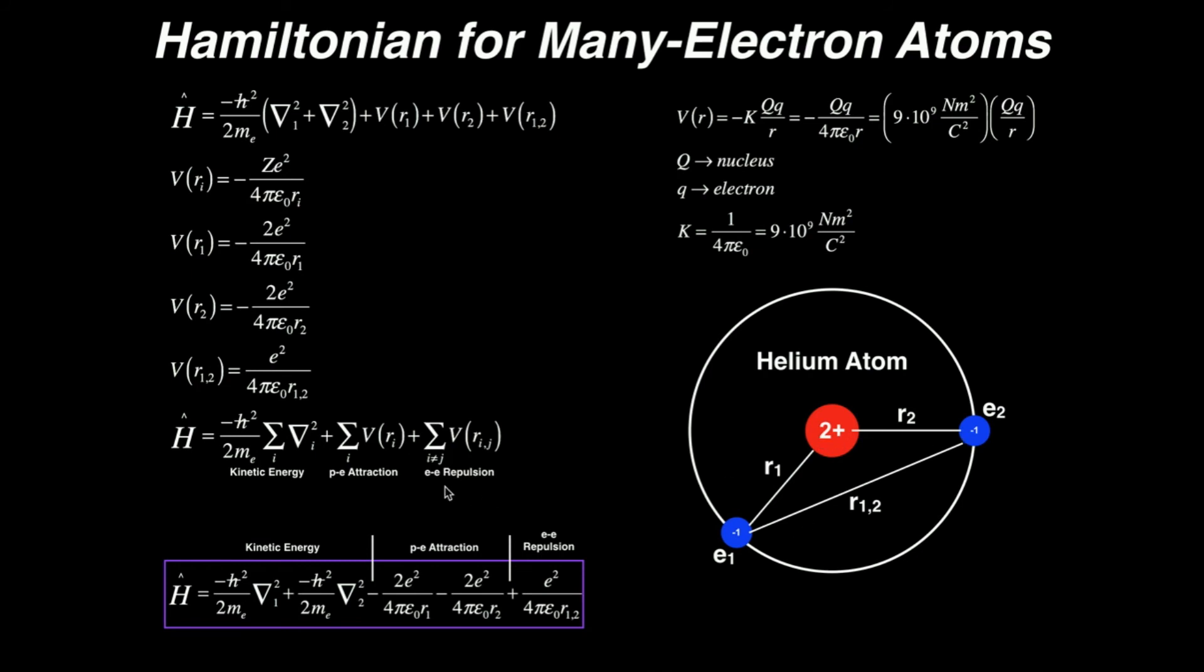Now we add on the potential energy terms for the attractions. They're also negative. So we determined that they were negative two e squared over four pi epsilon zero r1 minus two e squared over four pi epsilon zero r2. And again, we have two electrons, so there's two attractive terms. Each electron is attracted to the nucleus. Then we have our electron electron repulsion term. So this is just going to be e squared over four pi epsilon zero r12. And this is the only one that's going to be positive over here. All the others are essentially negative. And this is going to be your Hamiltonian for a helium atom.